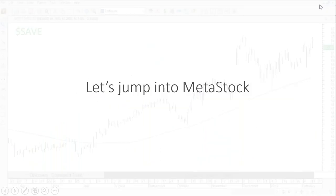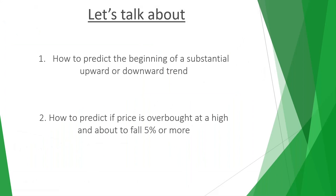Our first topic was learning how to predict the beginning of a substantial upward or downward trend, which we just did with our Endeavor and Discovery categories. Now let's go over our second topic: how to predict if price is overbought, at a high, and about to fall 5% or more. Historically, this has been very difficult to predict, but we've designed a signal that will alert you at least one day in advance. It's part of what we call Smart Get-Outs.